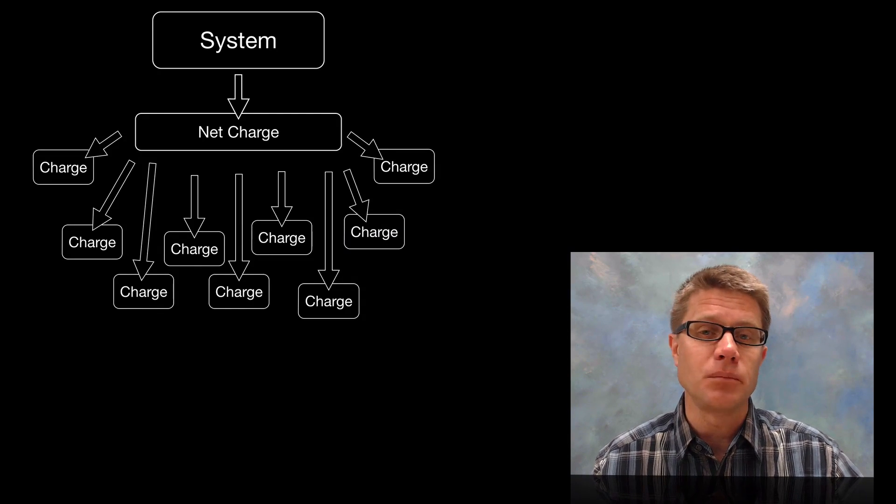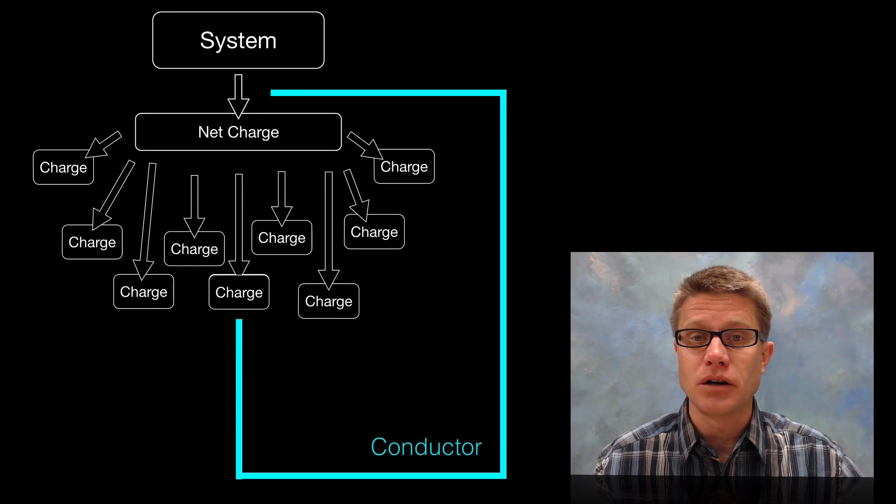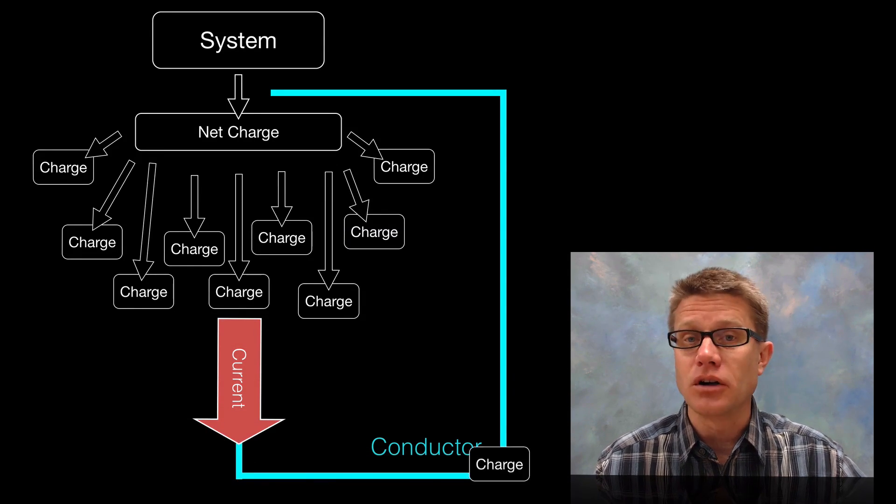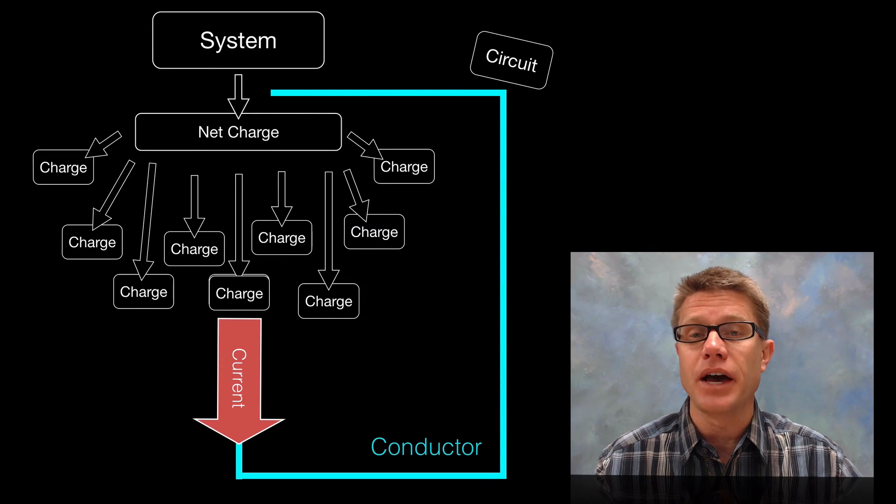Now the charges can be moved. They can be transferred from one place to another. And the movement of a charge through a conductor is called current. And so if that charge continues moving around and then comes back again and keeps moving we call that a circuit.